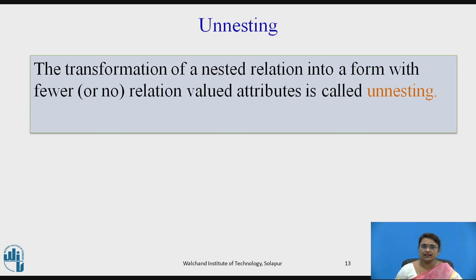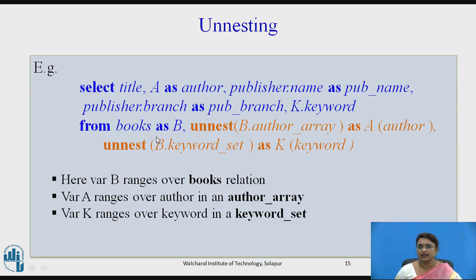Now let us define unnesting precisely: it is the transformation of a nested relation — where nested contents or relation-valued attributes exist — into a form with fewer nesting levels, iterating elements one by one. To fully unnest the books relation, the query selects title, author, publisher name, publisher branch, and keyword, unnesting author_array (aliased 'a') and keyword_set (aliased 'k'), with b ranging over books.